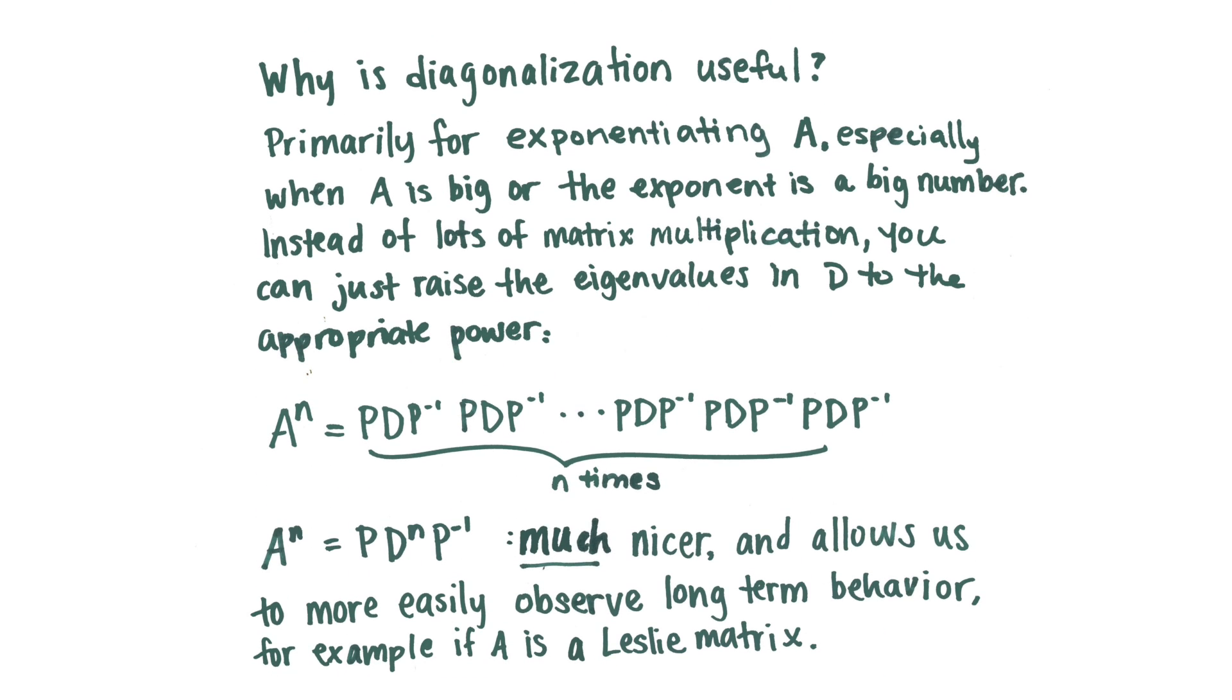Now, why is this actually useful? Primarily, we diagonalize matrices because we want to raise them to a high power, and that's a lot of matrix multiplication for a person or for a computer. And so if A is really big, or the exponent is really big, instead of all that matrix multiplication, you can just raise the eigenvalues in D to the appropriate power.